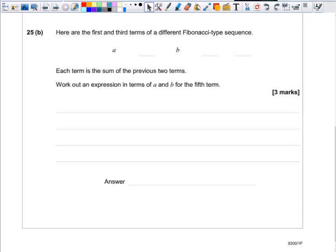Question 25b. Here are the first and third terms of a different Fibonacci type sequence. Each term is the sum of the previous two terms. Work out an expression in terms of a and b for the fifth term.